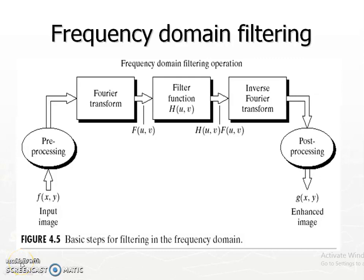Welcome back. Let us look at frequency domain filtering for image enhancement. In spatial domain filtering, we have directly worked with the image and manipulated pixel values directly. In frequency domain filtering, we do some preprocessing and then take the Fourier transform of the image, multiply it with the corresponding filter, take the inverse transform, apply post-processing, and get the enhanced image.